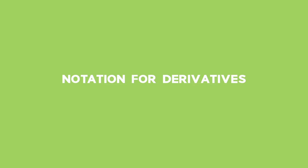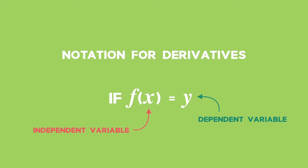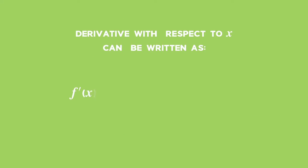There are different notations used to indicate the derivative. If f of x equals y, the following denote differentiation of the dependent variable y with respect to the independent variable x: f prime equals y prime equals dy by dx equals d by dx of f of x.